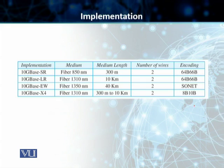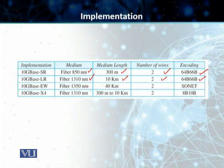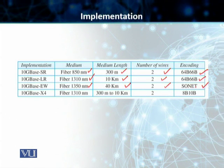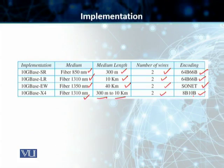The first implementation is 10GBase-SR, which uses an 850 nanometer fiber medium, medium length of 300 meters, two wires, and 64B/66B encoding. Then there is 10GBase-LR with a fiber length of 10 kilometers, two wires, and the same 64B/66B encoding. Next is 10GBase-EW with 40 kilometers length, two wires, and uses SONET. Finally, 10GBase-X4 supports 300 meters to 10 kilometers, two wires, and uses 8B/10B encoding.